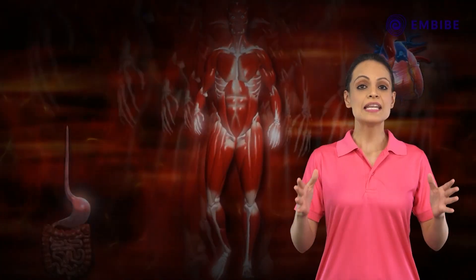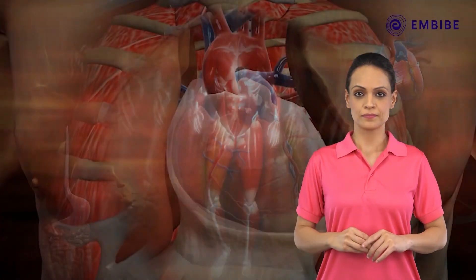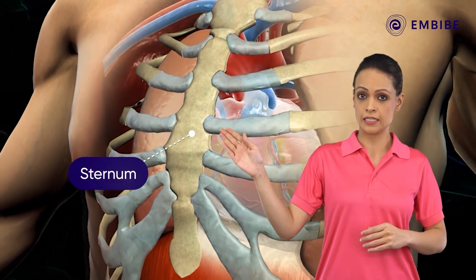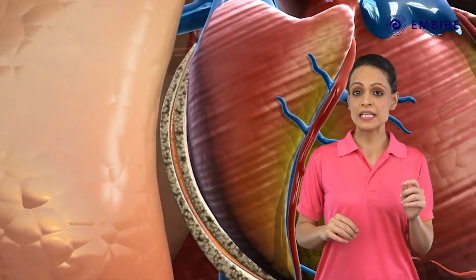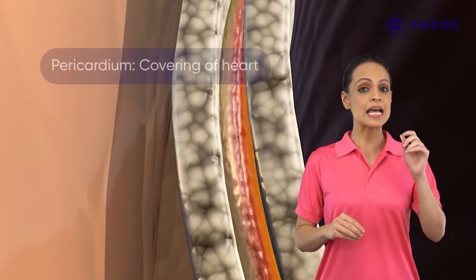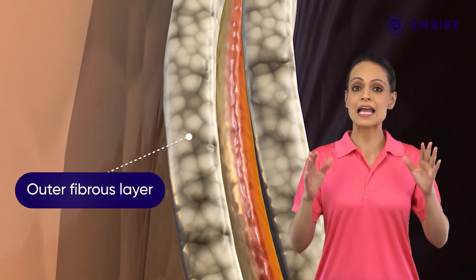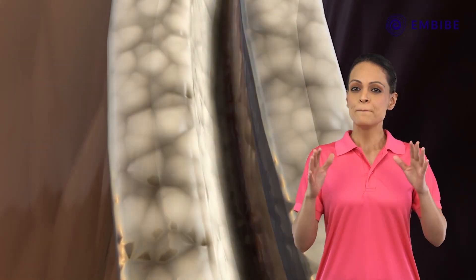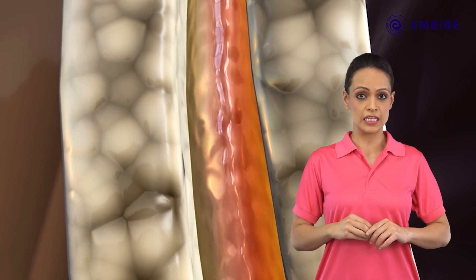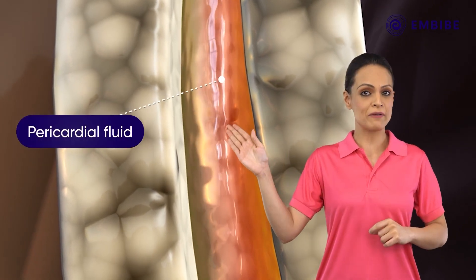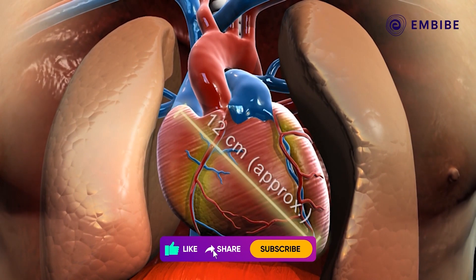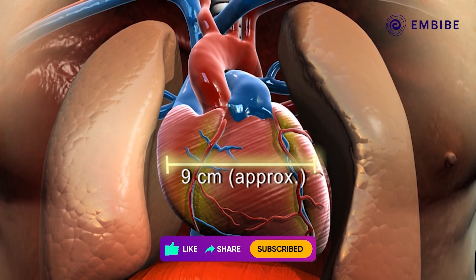Anatomy of the heart: the heart is located inside the rib cage, situated behind the sternum between the lungs. It remains enclosed in a double-walled sac called the pericardium. It has an outer fibrous layer and an inner serous layer. Between these two layers is a very narrow space called the pericardial cavity, which is filled with pericardial fluid.